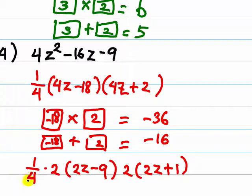And then we can cancel, because 1 fourth, I mean 2 times 2 is 4. So 4 divided by 4 is 1. So we can cancel this to get this factorization.